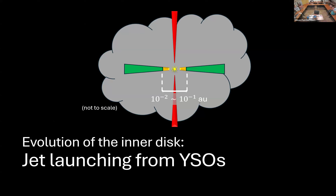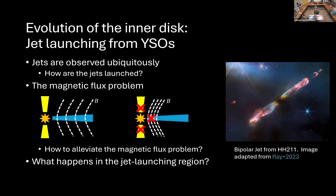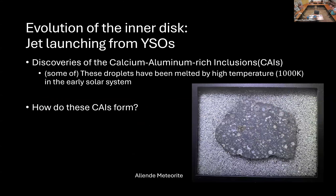Last but not least, I'll briefly talk about jets — how jets are launched in young stellar objects. Jets are observed everywhere around young stellar objects. We always have the magnetic flux problem: if we drag all the magnetic field towards the center, the field becomes so strong it would destroy the disk and potentially choke the jet. Can we alleviate this magnetic flux problem? Also intriguingly related is the discovery of calcium-aluminum-rich inclusions — CAIs. On my hand is a piece of the Yande meteorite, which contains white droplets called CAIs believed to have been melted by temperatures over 1000 Kelvin in the early solar system, achievable only near the star. How did these droplets get so close to the star yet appear in our hands today?